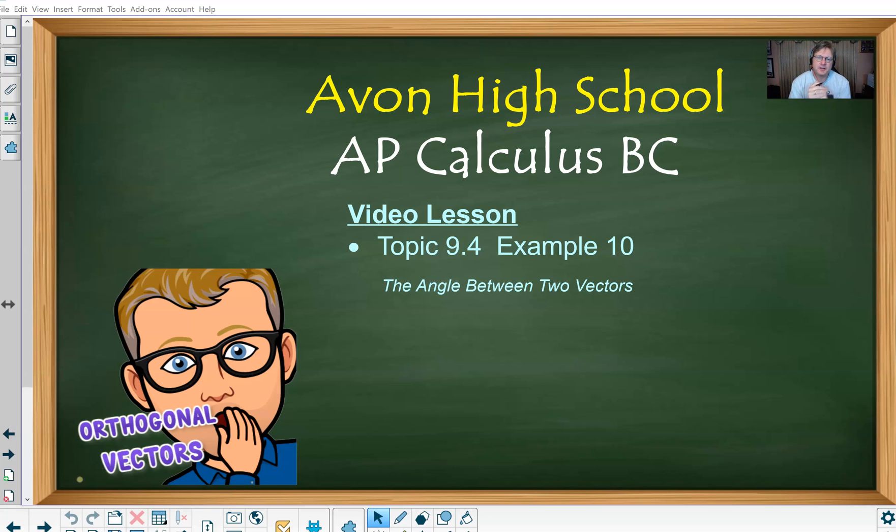Hi AP Calculus BC students, Mr. Record here. We're going to take a look at our example number 10 from our topic 9.4. We're still on the tail end of talking about our dot products, but we're now going to put a little bit more pizzazz with it. We're going to talk a little bit more about what the dot product truly is in terms of the vectors from which it's computed. We're going to focus a lot on the angle made between the two vectors, and we're also going to mention this idea of orthogonal vectors. Let's take a look.